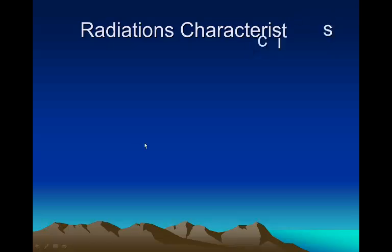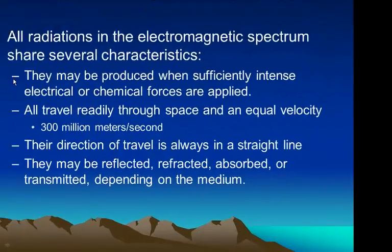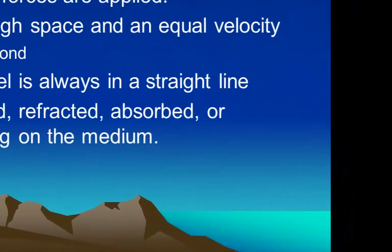Radiation characteristics. All radiations in the electromagnetic spectrum show several characteristics. They may be produced when sufficiently intense electrical or chemical forces are applied. They all travel readily through space and equal velocity. Their direction of travel is always in a straight line. And they may be reflected, refracted, absorbed, or transmitted depending on the medium.